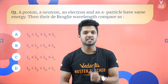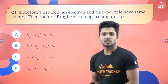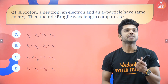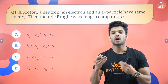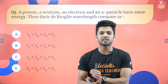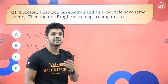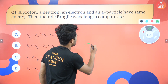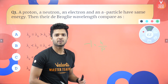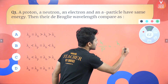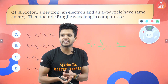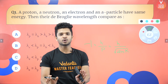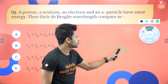Question one: a proton, a neutron, an electron, and an alpha particle all have the same energy. Their de Broglie wavelengths are compared — what is the relationship between them? The formula for de Broglie wavelength is lambda equals h divided by p. The relationship between momentum and kinetic energy is: momentum equals root of 2m times kinetic energy.